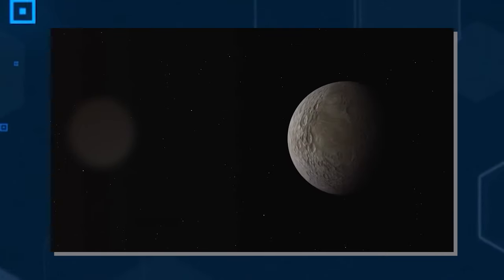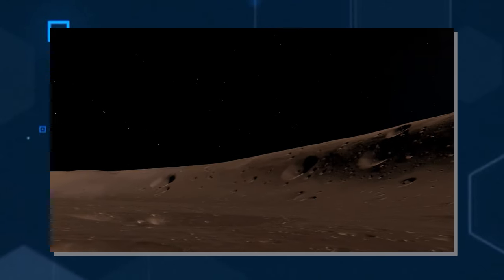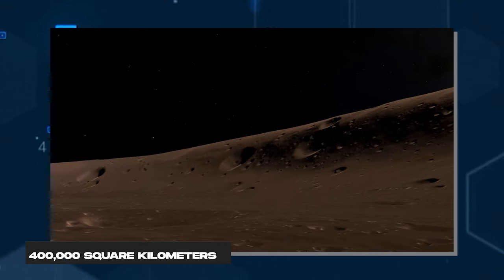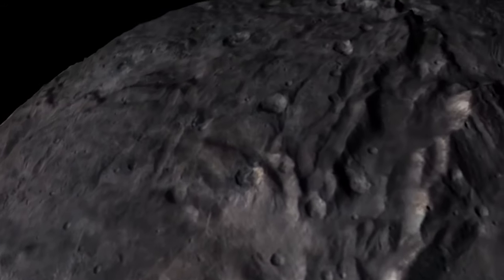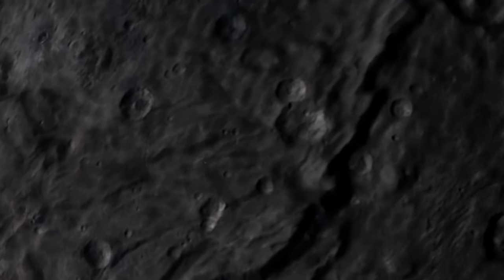To the south of the equator lies a vast region known as Vulcan Planum. While its exact area is not precisely known, it measures no less than 400,000 square kilometers, akin to the size of an average European country.